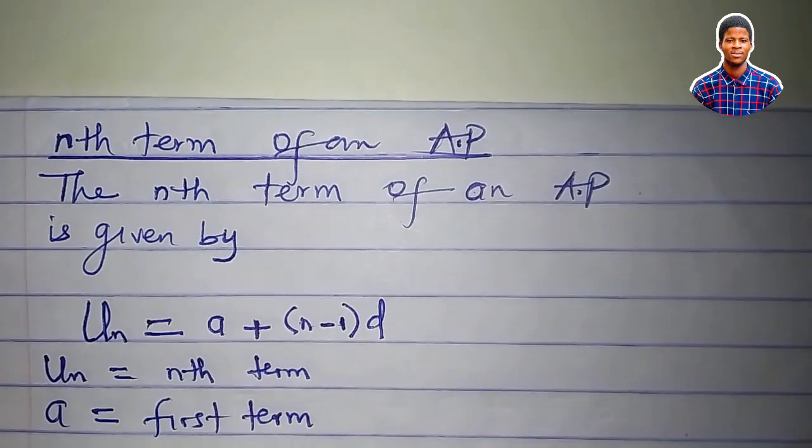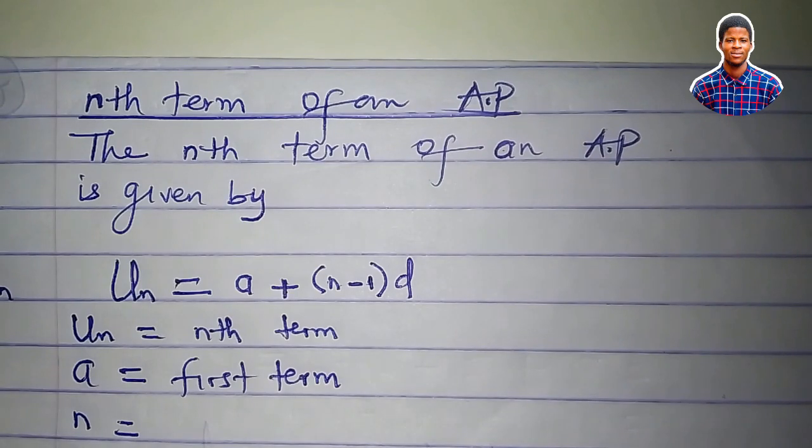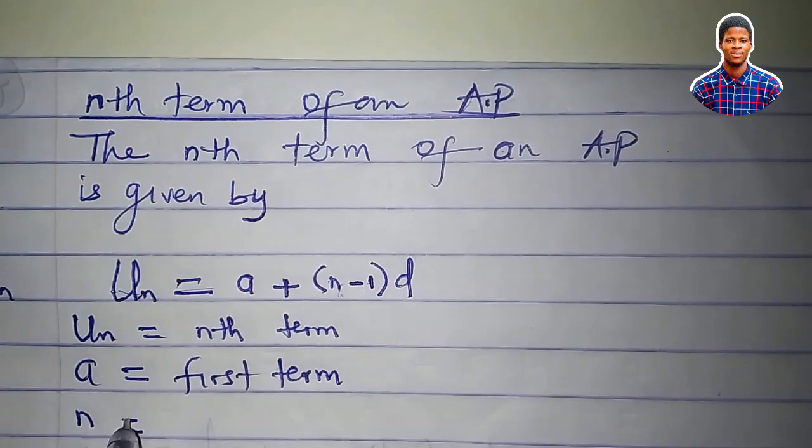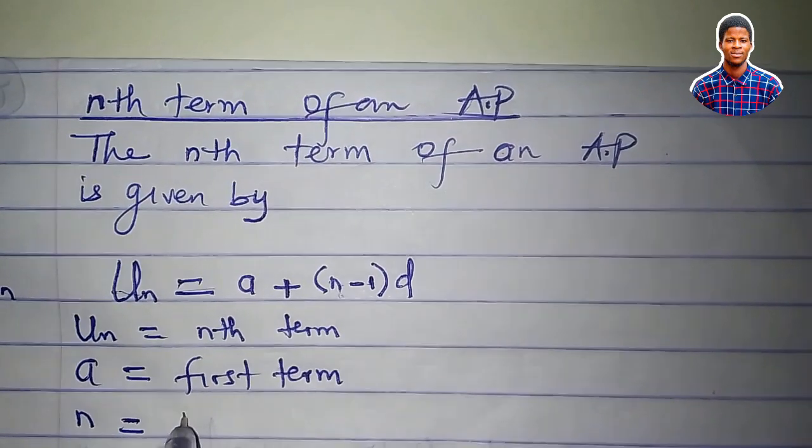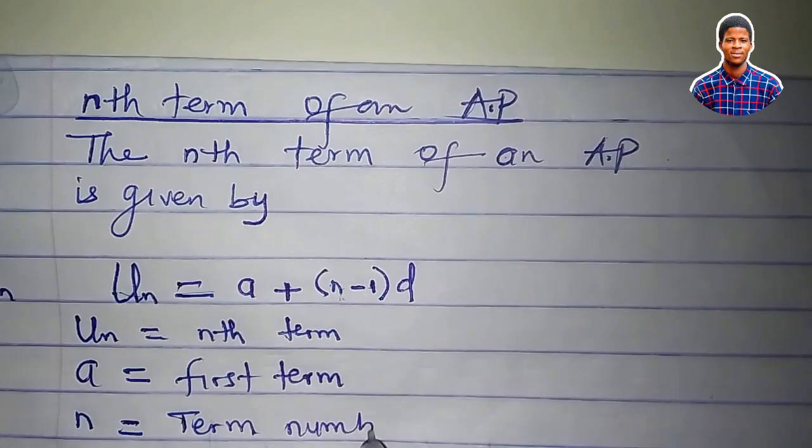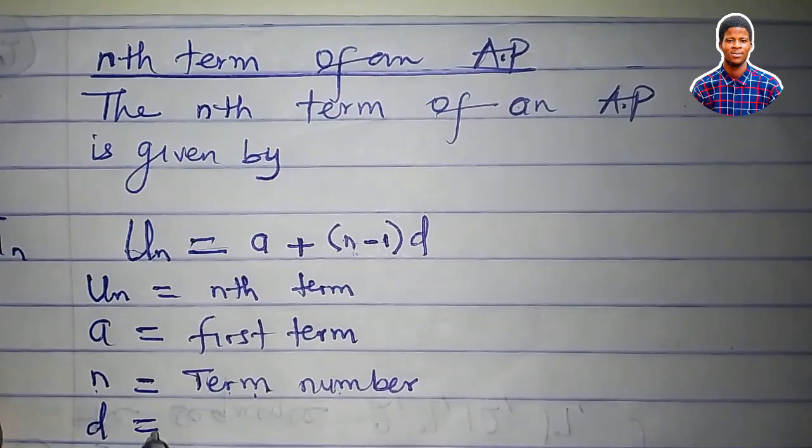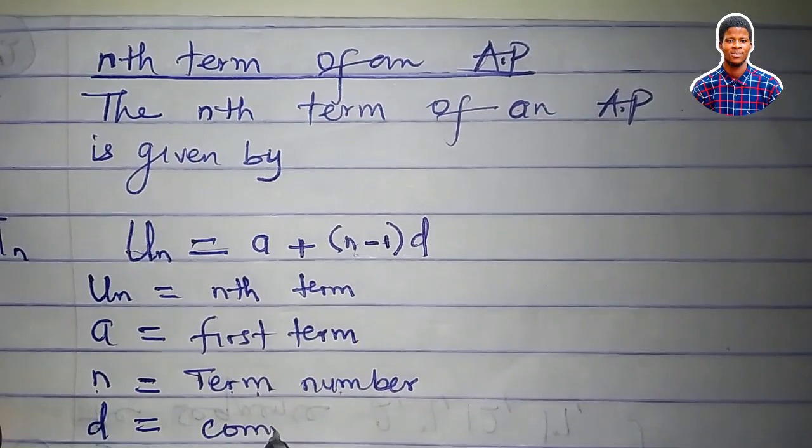What is a? a is the first term, that is the term that begins the sequence. What is n? Take note of this. For nth term, n is the term number. And what is d? d is the common difference.